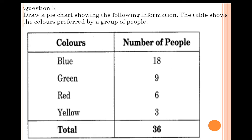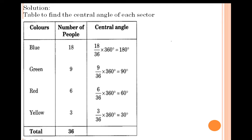Question 3: Draw a pie chart showing the following information. The table shows the colors preferred by a group of people. Blue is preferred by 18, Green by 9, Red by 6, Yellow by 3, and the total number of people is 36. Sometimes questions do not give the total, so you have to find it, because this total is used in the denominator when finding the central angle.